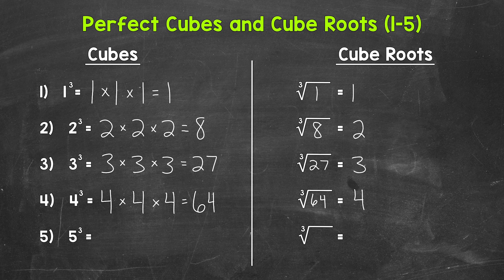Let's move on to number five where we have five cubed. That means five times five times five. Five times five is twenty-five times five is one hundred twenty-five. So five cubed equals one hundred twenty-five.